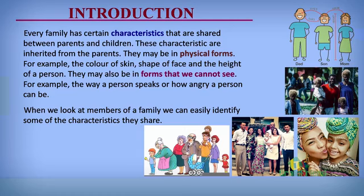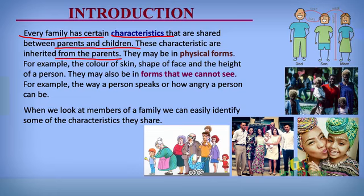Every family has certain characteristics that are shared between parents and children. That is probably why you look like your mom or your dad, your grandparents, or your uncle or auntie. These various characteristics shared between parents and children are often inherited from parents. For example, I am as tall as my dad - I inherited that trait or characteristic of tallness from my dad.